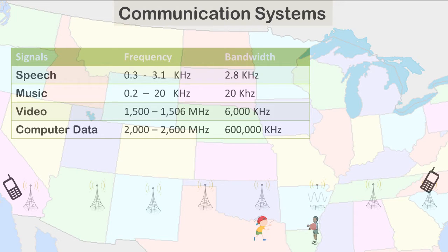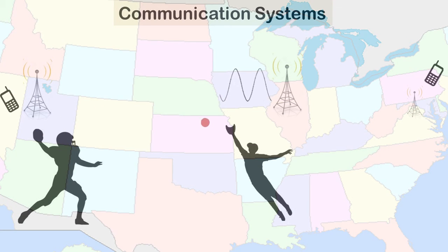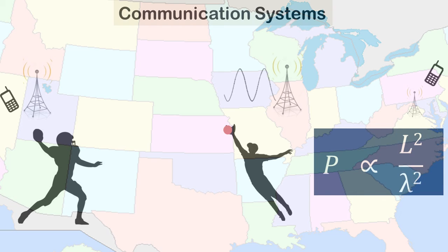If the waves were stronger, they could travel much larger distances. The power radiated by an antenna is proportional to the length of the antenna and inversely proportional to the wavelength of the wave. So an antenna will radiate much higher power for shorter wavelength waves.